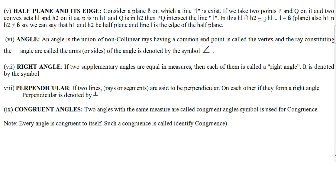Consider a plane B. A plane has a horizontal and vertical extent on which a line l exists. If we take 2 points P and Q on it, and 2 convex sets H1 and H2 on it, where P is in H1 and Q is in H2, then segment PQ intersects the line l.